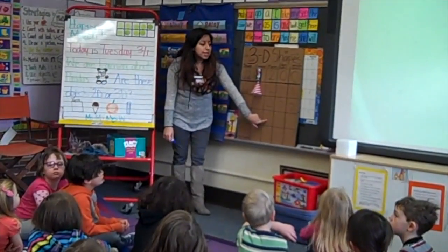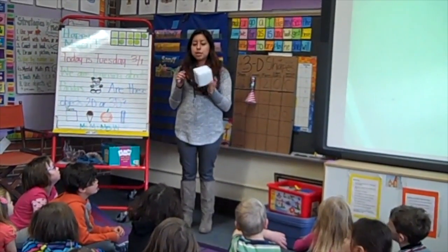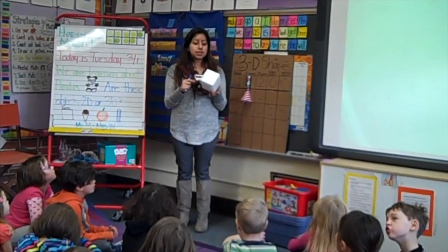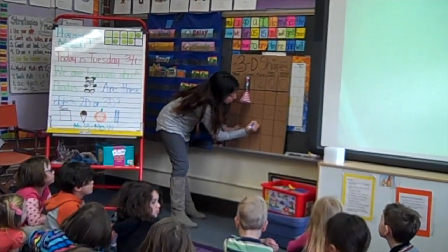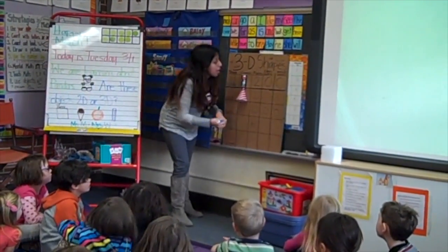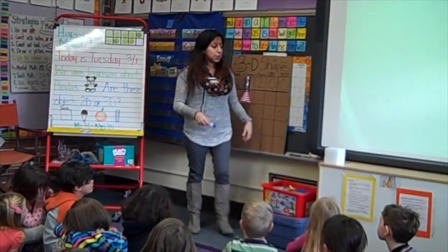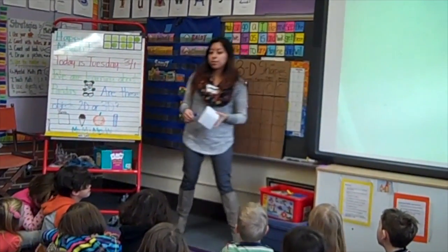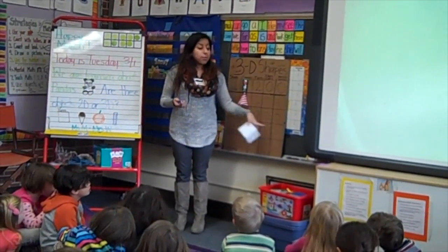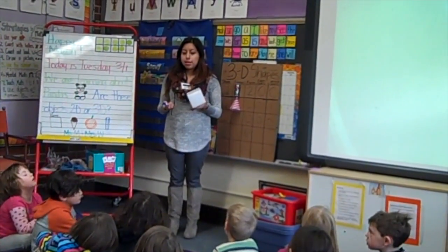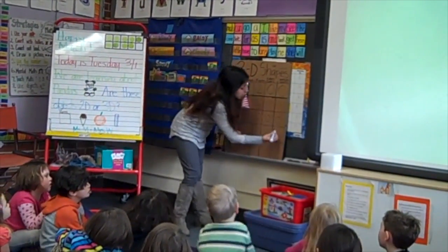How many faces did we say the cube had? Six. Did it have any sides? We didn't see any sides. We're just counting vertices for now. How many vertices or points does it have? Eight.